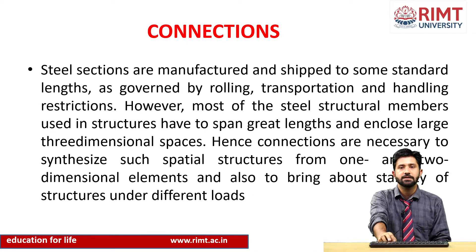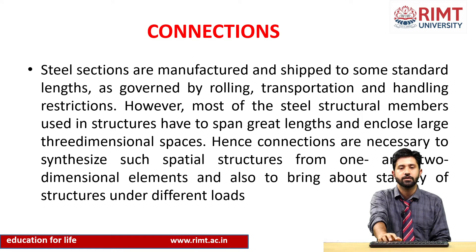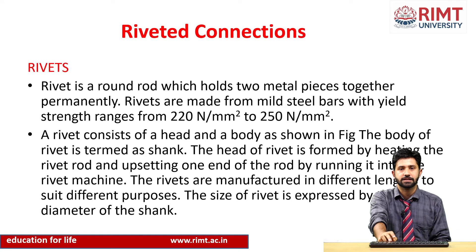Next is connections. A connection is a joint between two members and is the weakest part of any structure, so we apply a higher factor of safety to connections. We have three to four main types of connections in steel structures: riveted connections, bolted connections, welded connections, and pin type connections.